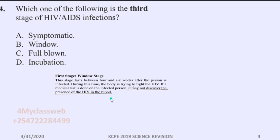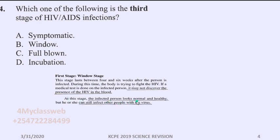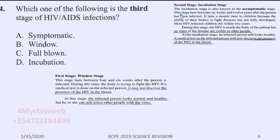This stage is very dangerous because no one will be able to tell whether this person is infected or not. At this stage the infected person looks very normal and healthy, but he or she can still infect other people with the virus. Take care — you will not be able to tell whether the person is infected or not.